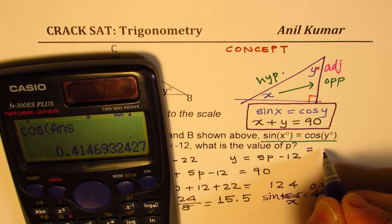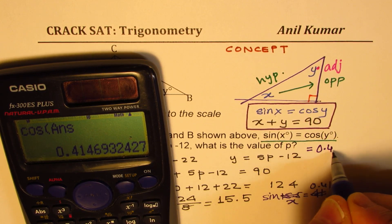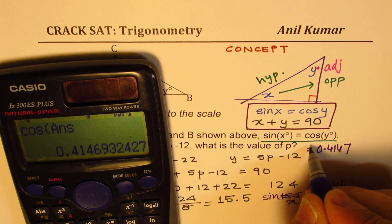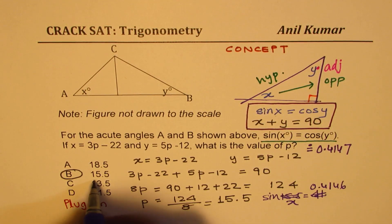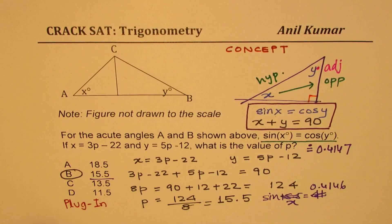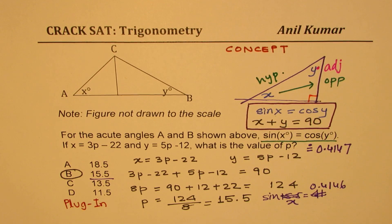So we find both of them are equal to 0.4147 approximately when the value for p is 15.5, perfect. So if you use the calculator, you'll definitely get that as your answer.